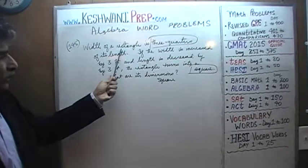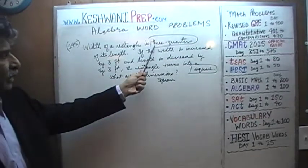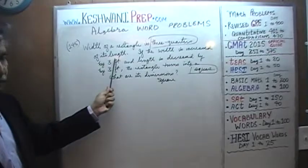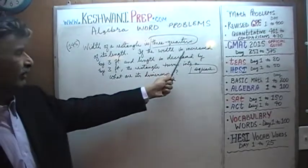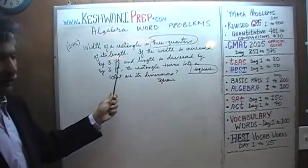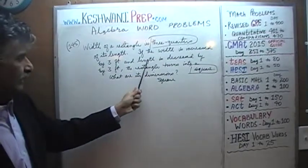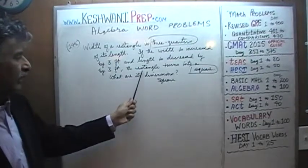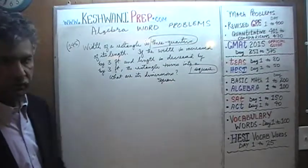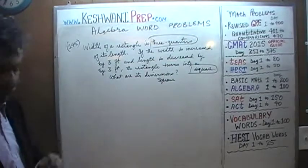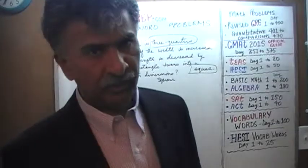It says that the width of a rectangle is 3 quarters of its length. They go on to tell us that if the width is increased by 3 feet and the length is decreased by 3 feet, the rectangle turns into a square. The question simply is: what are the original dimensions? Let's do it together, shall we?